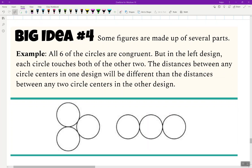All right, and the last one, this is like special cases. Some figures are made up of several parts, but everything has to be the same. Like for example, all six of the circles are congruent, but in the left design each circle touches both the other two. The distance between any circle centers in one design will be different than the distance between any two circle centers in the other. So, for example, if I go ahead and put the centers in, you can see it creates a triangle on the left design, but it creates a straight line in the right design. Everything has to be the same, even though individual parts may not. Please pause this video until everyone's finished.